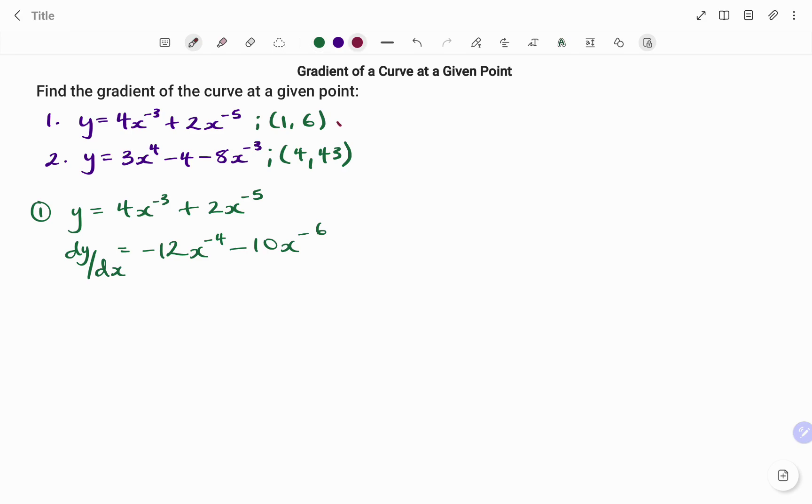Because we've been given the point (1,6), the value of x is equal to 1. So we need to find the corresponding values by inserting x equals 1 in our expression. So we have dy/dx at x equals minus 12 times 1 to the power of negative 4 minus 10 times 1 to the power of negative 6. That will be negative 12 times 1 minus 10 times 1, which is equal to minus 12 minus 10.